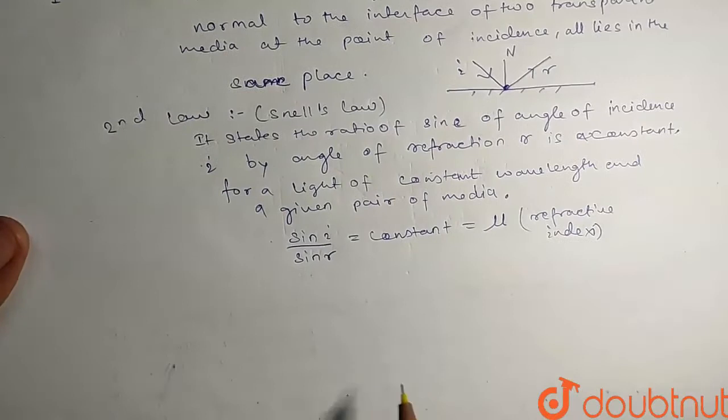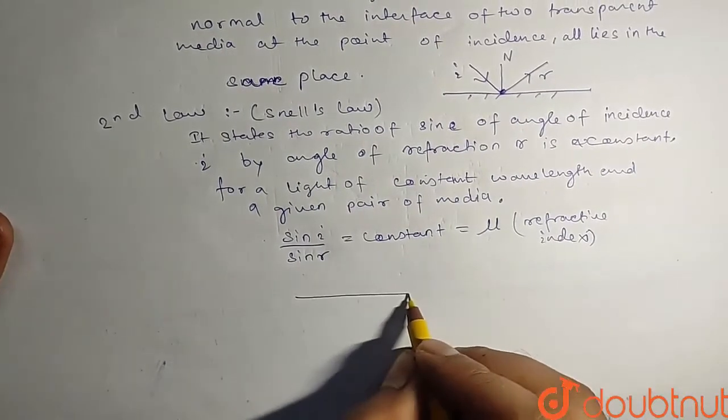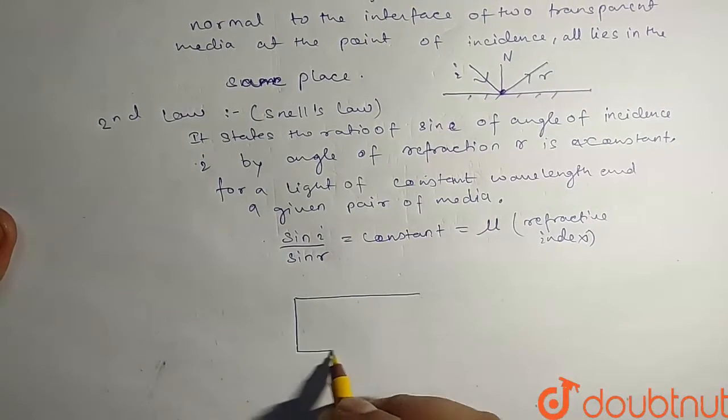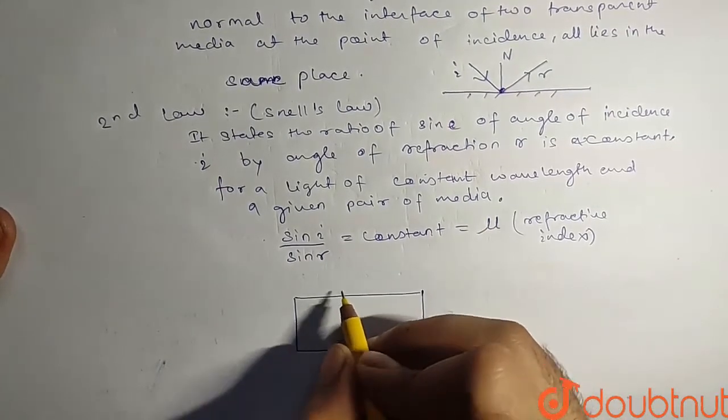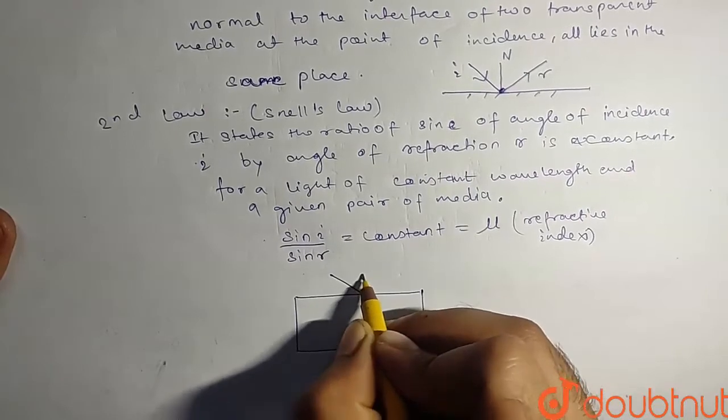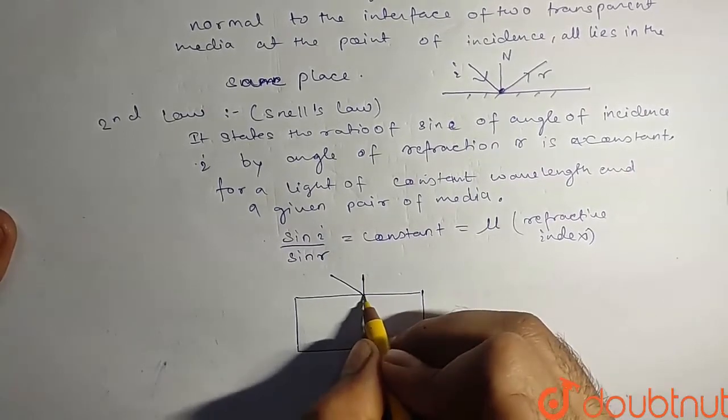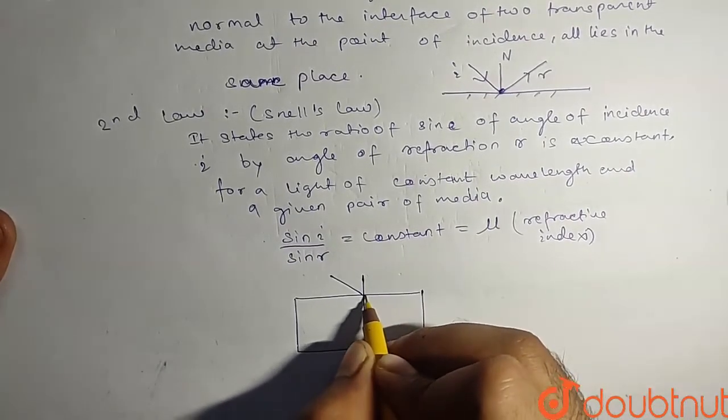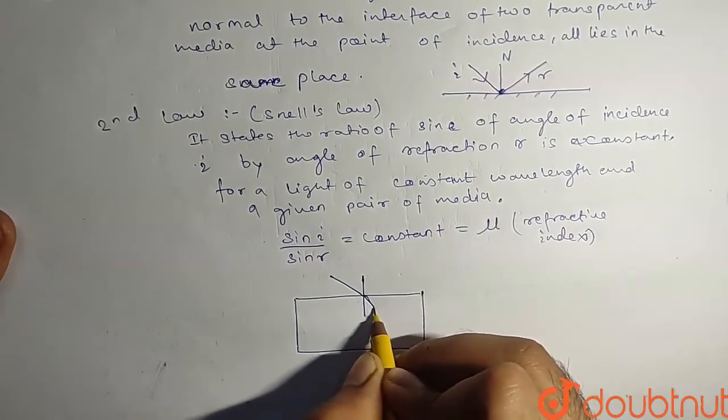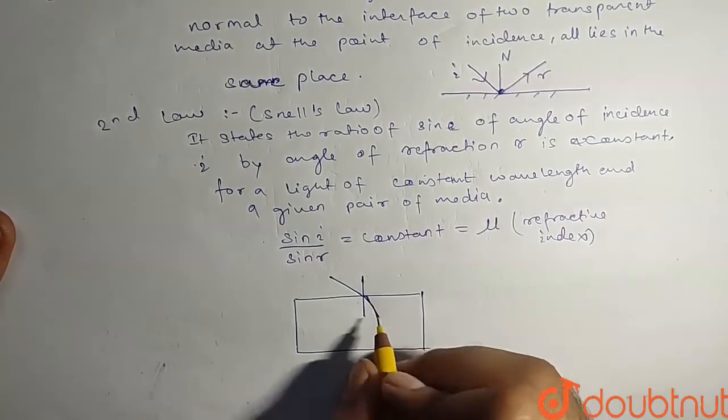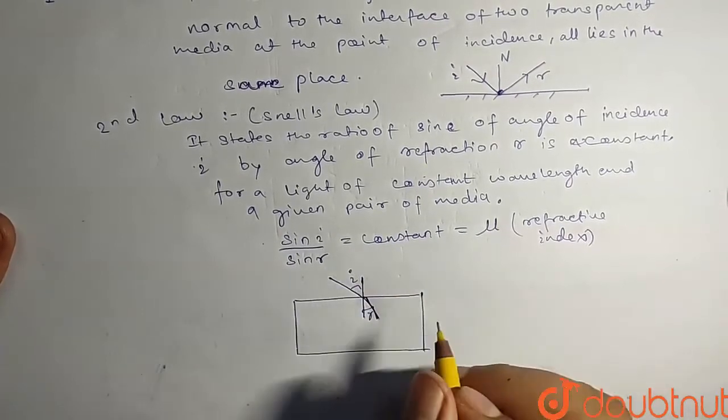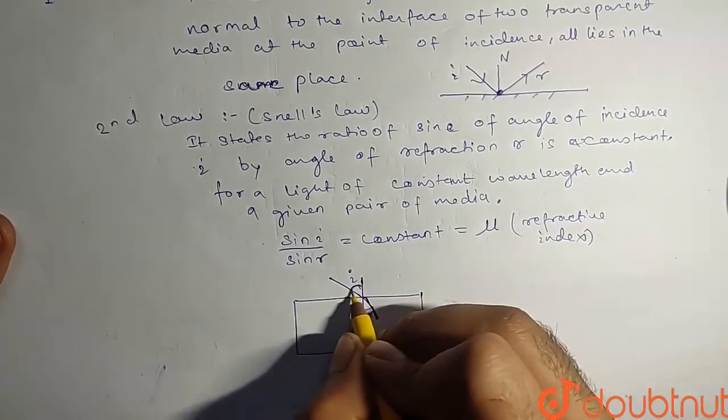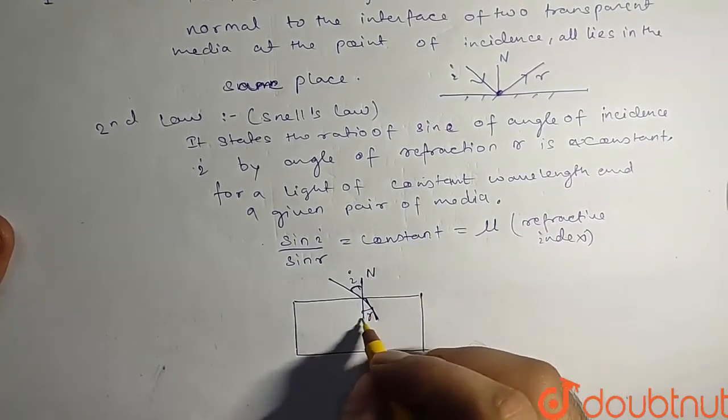So now we have to show the example of glass slab. This is the normal. Now the light ray is bending, making an angle of incidence i. Angle of incidence is i, n is normal.